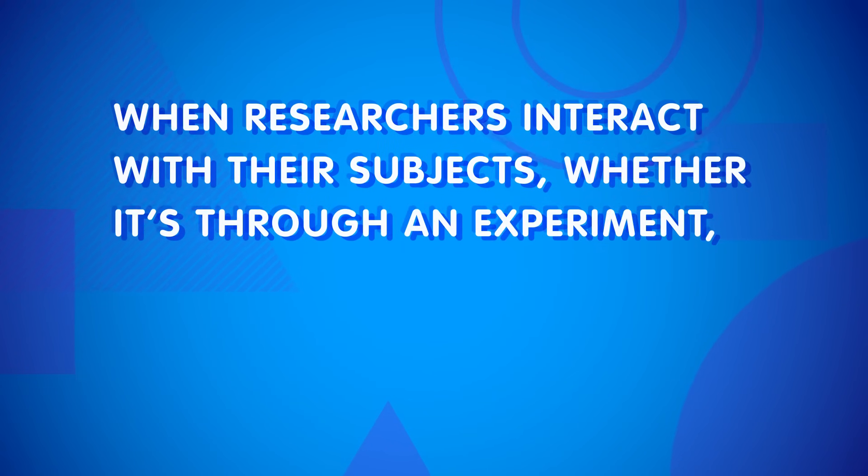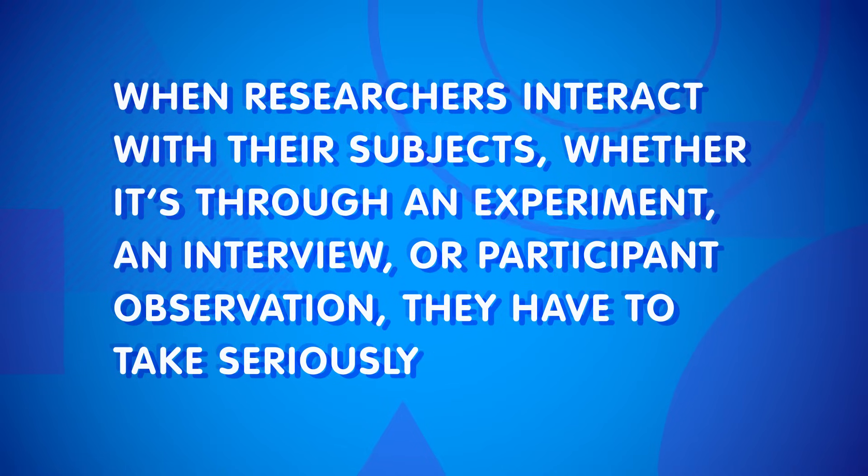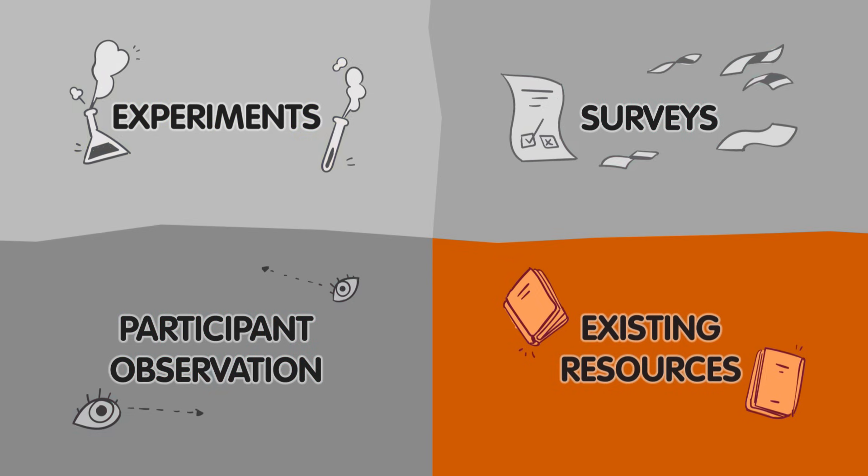There's one thing that's important to note about these three types of research. When researchers interact with their subjects – whether through an experiment, an interview, or participant observation – they have to take seriously the ethics of their research. Sociologists are answerable to an institutional review board, which ensures that all researchers take the privacy and well-being of their subjects into consideration when they design their research methods. For example, informed consent of the subject is a must – your subjects must know you're observing them, and must be made aware of any risks that they take by being part of your study. Not all research methods require you to interact with your subjects or even collect your own data. Many sociologists analyze existing sources of data collected by others. The most common of these are government agencies, which collect statistics on income, health, education, employment, marriage, and fertility. These data sets are much larger and cover more years than an individual researcher could collect on their own, and they save time and money for the researcher.